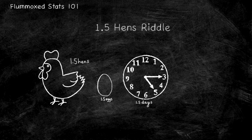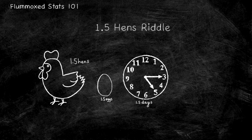This may be confusing, but let's break it down. 1.5 hens lay 1.5 eggs in 1.5 days — how many does one hen lay in one day? From a first read, you'd say one. Well, you're wrong. These hens are both lazy and imaginary, so you should use math. If 1.5 hens lay 1.5 eggs in 1.5 days, one hen would lay one egg in the same amount of time. Now, if one hen lays one egg in 1.5 days, using division, it means that one hen would lay two-thirds of an egg in a day. So the answer is two-thirds of an egg.